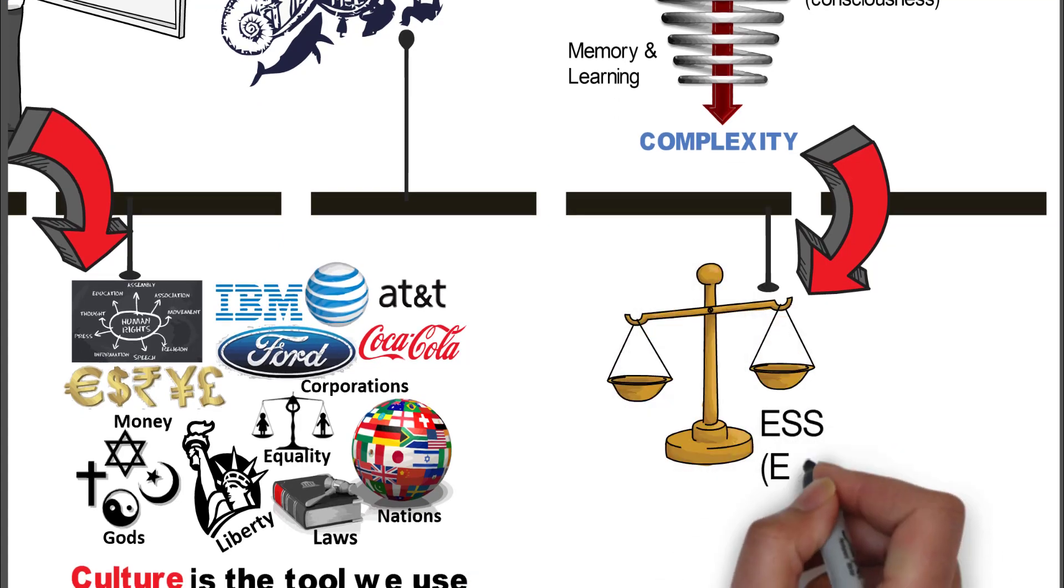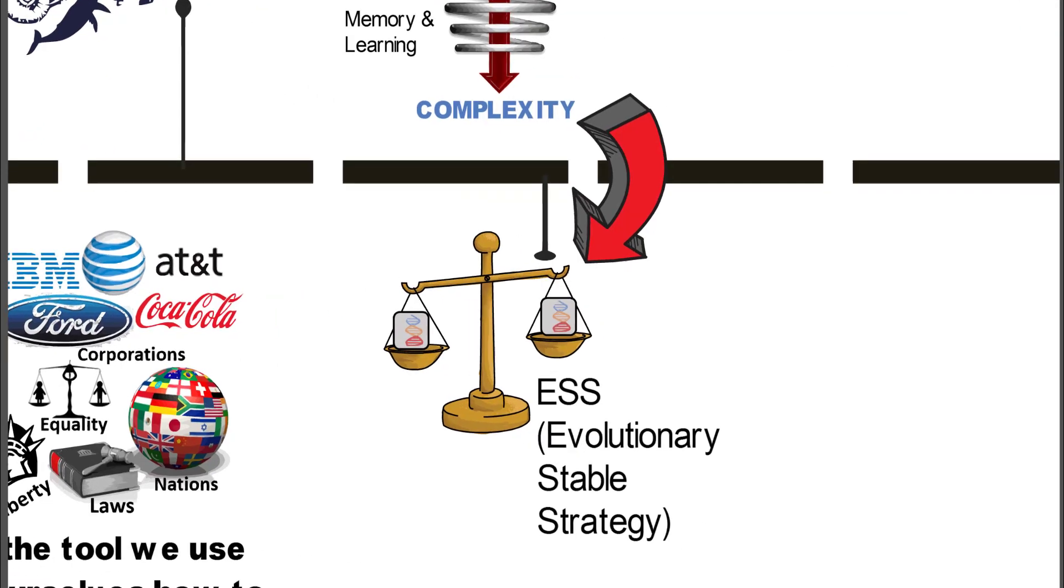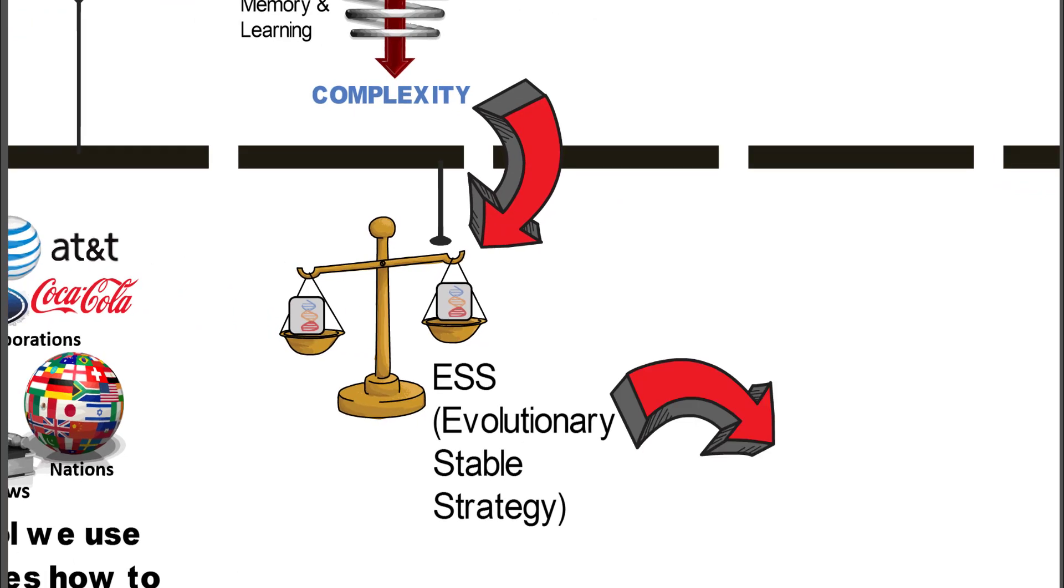But then the idea, he says, is how, though, if you have all of these genes and they're all competing, how do you end up where they're not knocking each other totally out? How do they come up with some kind of balance? And he calls that an evolutionary stable strategy.